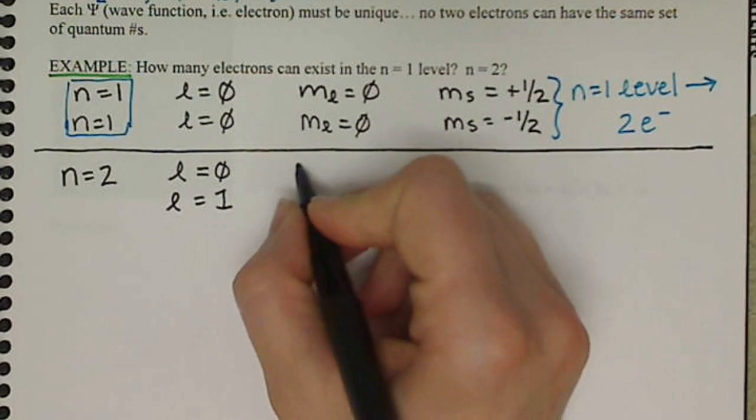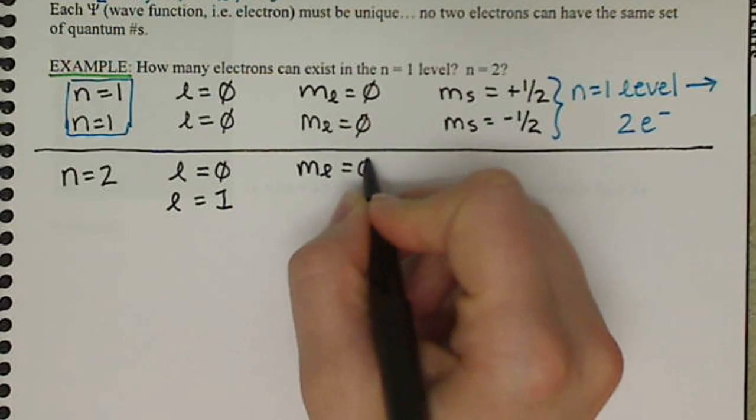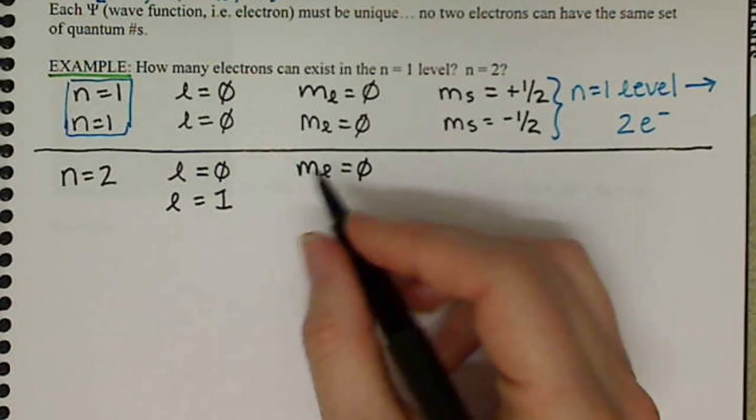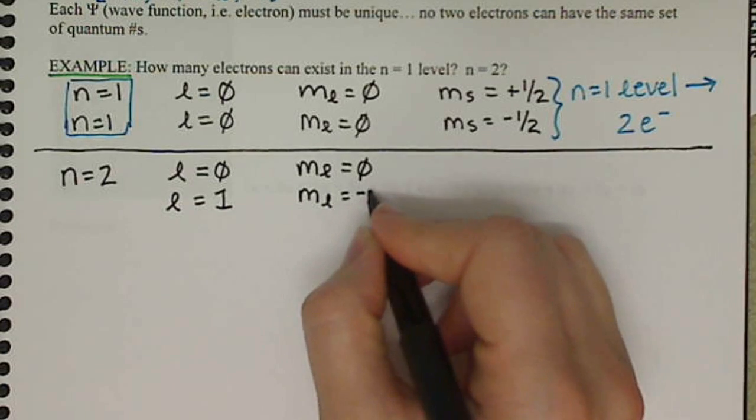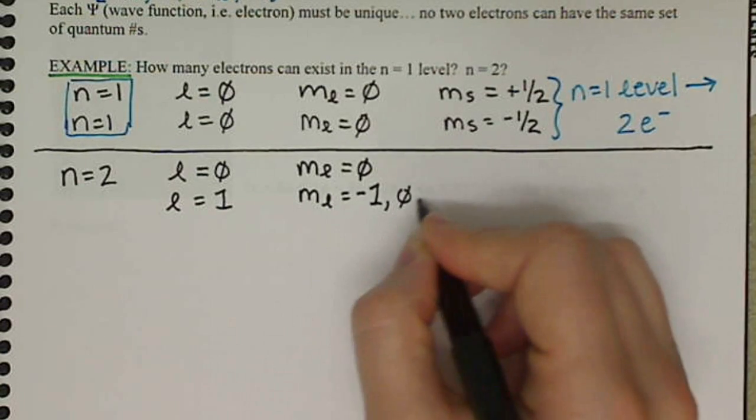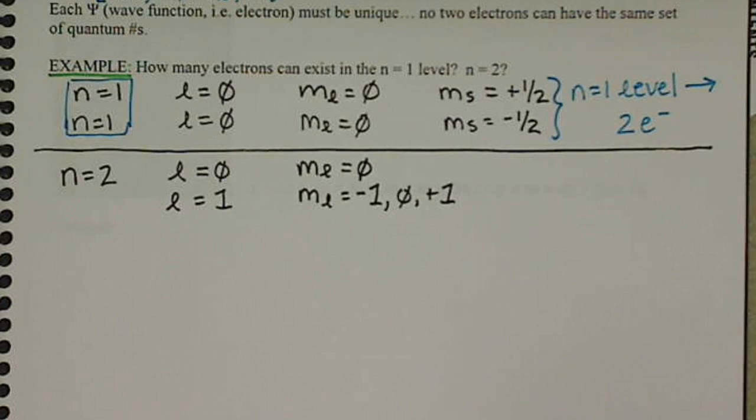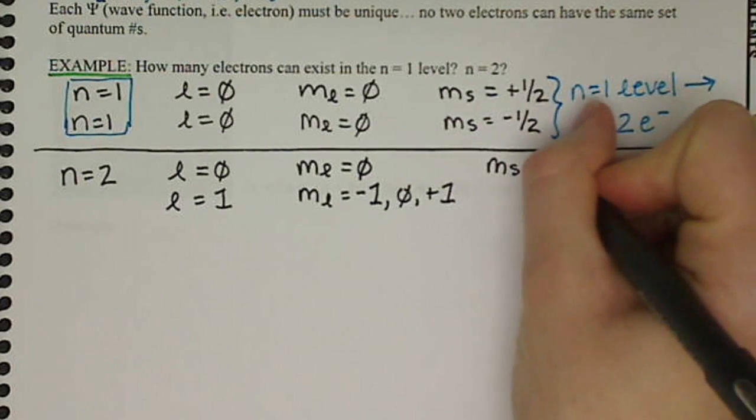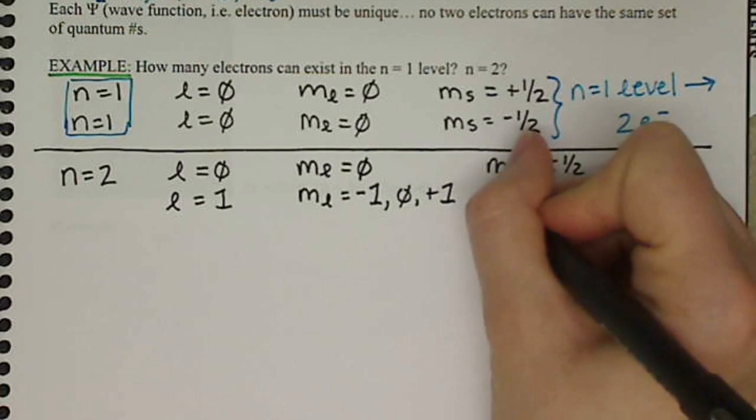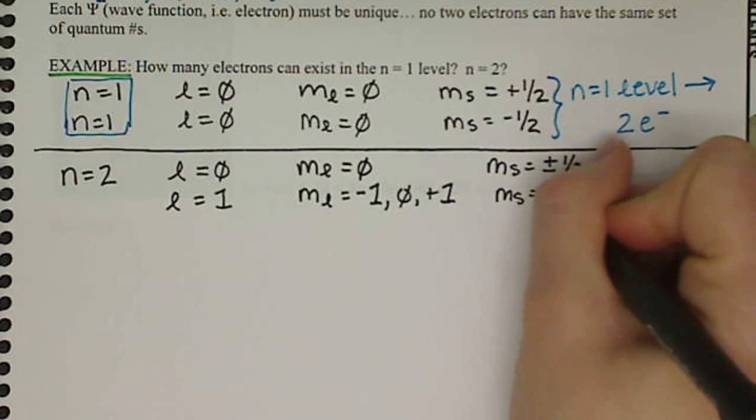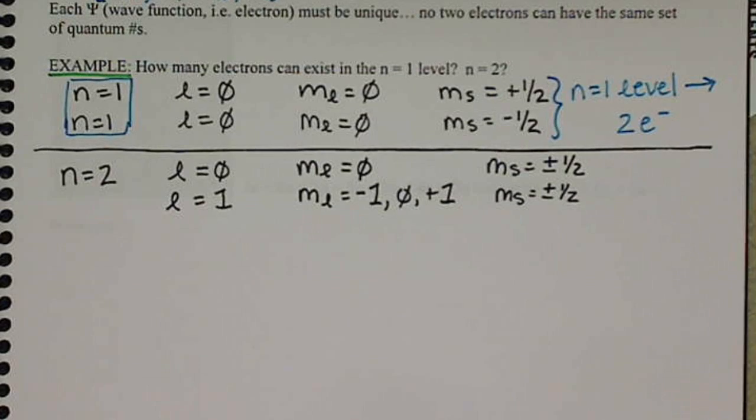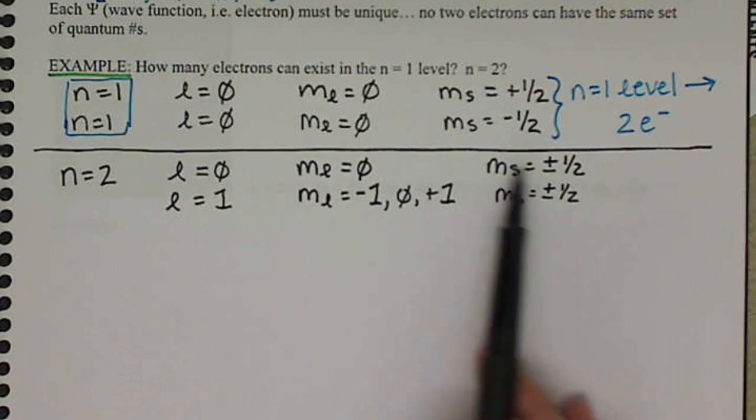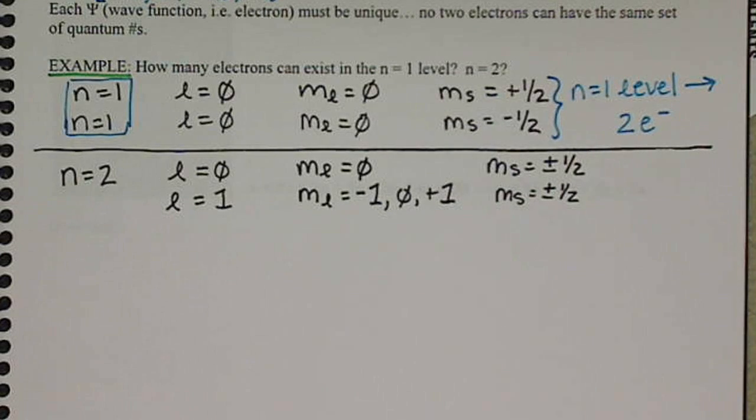If L equals 0, M sub L can only equal 0. But when L is equal to 1, M sub L can equal negative 1, 0, or positive 1. And then for both of these situations, M sub S, as always, can either be plus or minus 1 half. So this is an overview of our possibilities, but doesn't really describe how many electrons we can have.